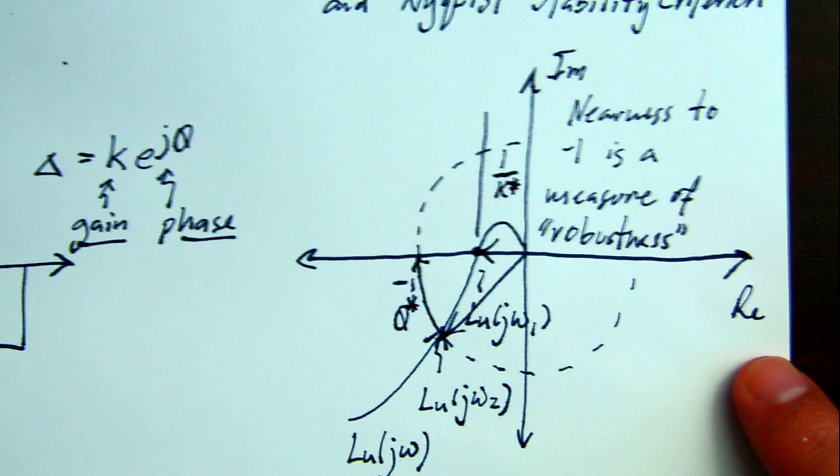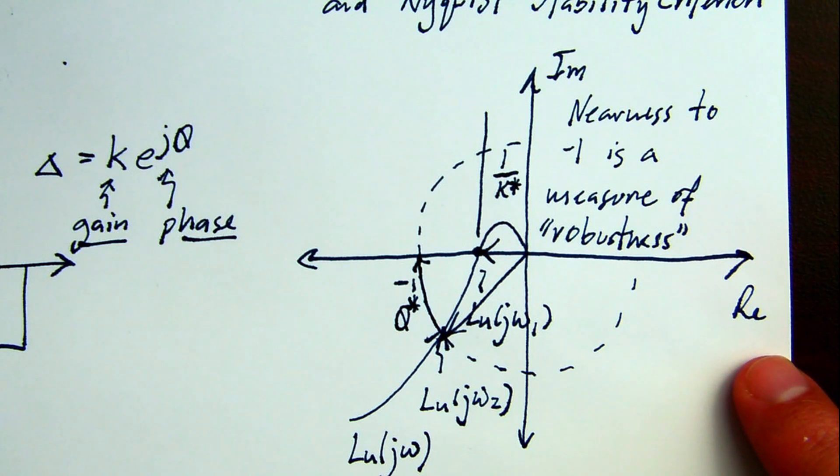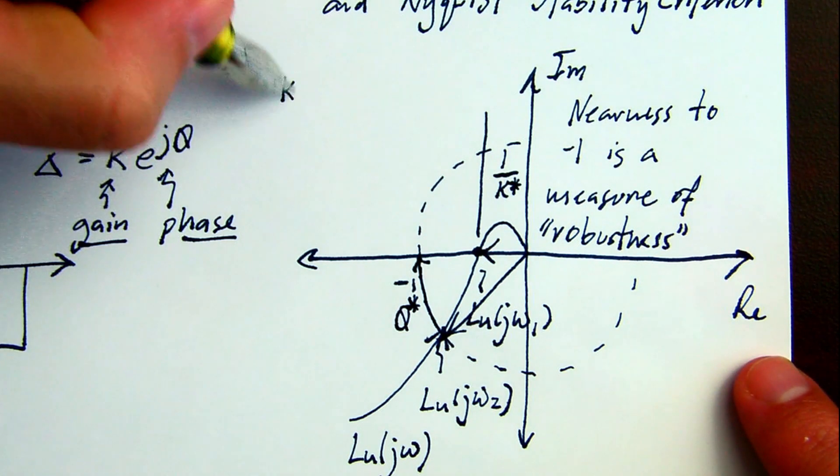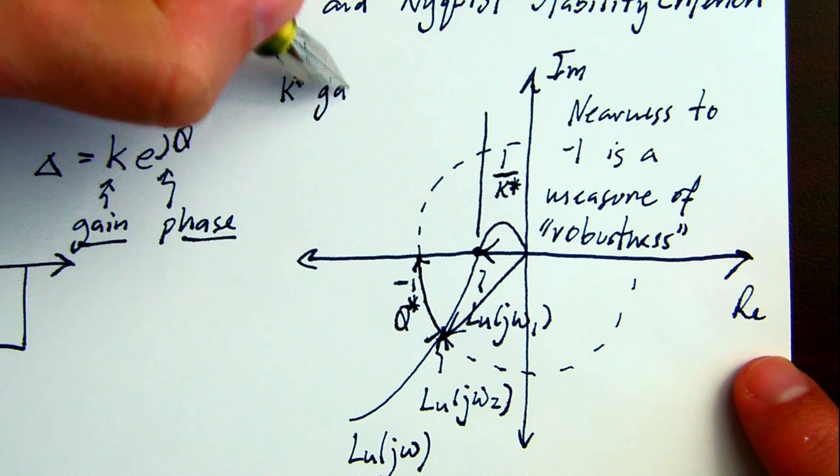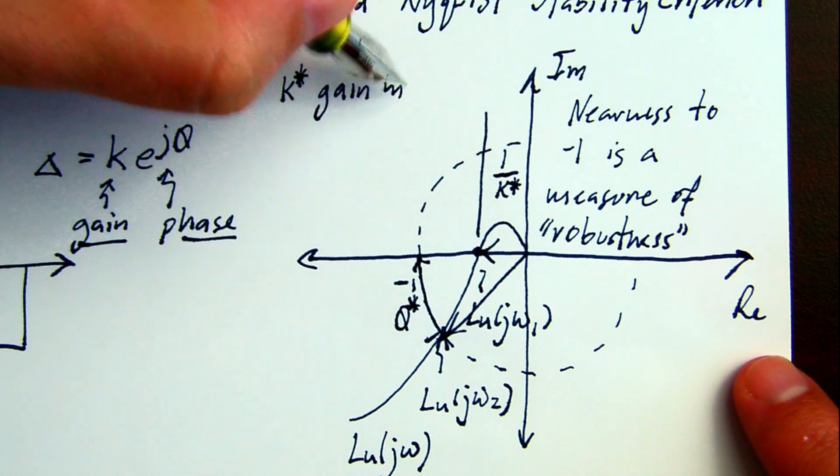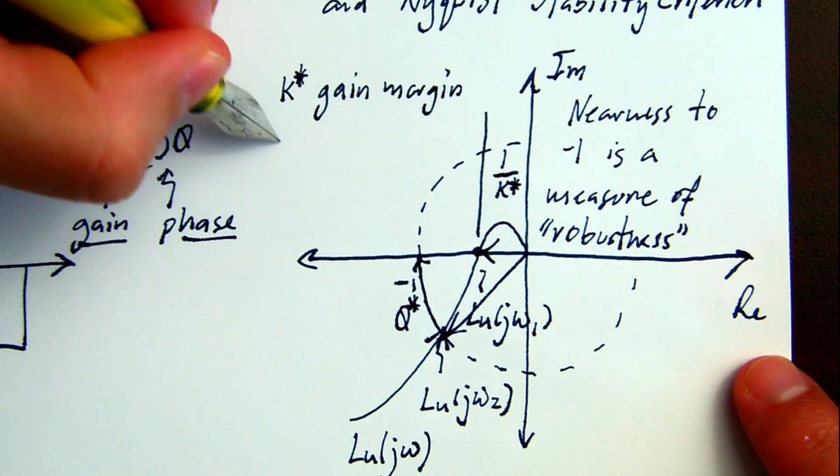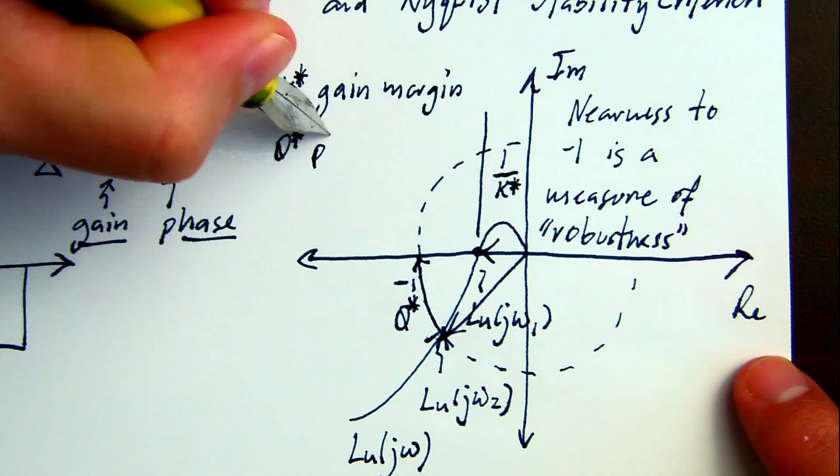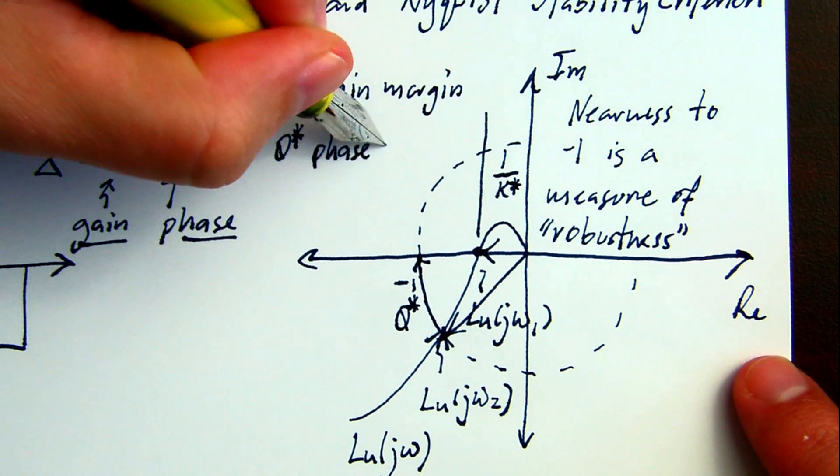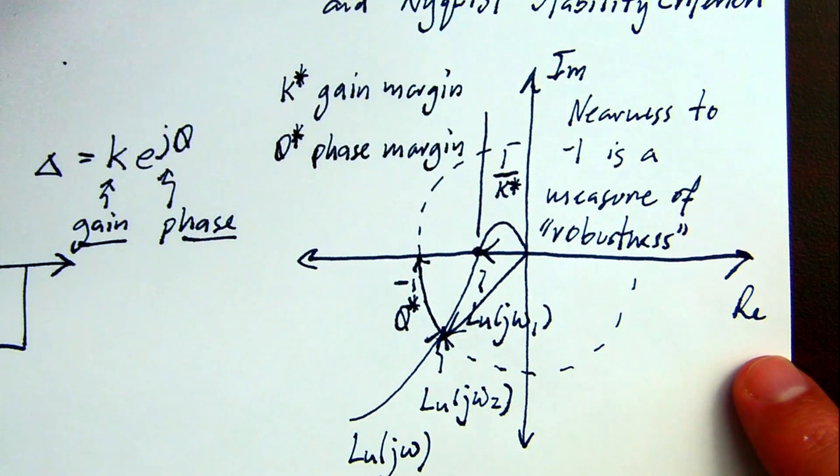In the follow-on to this video, we will derive formulas for K-star and theta-star, collectively referred to as the stability margins. For this, we'll use the delta uncertainty model. We'll also show how stability margins can be misleading. This will lead us to develop the return difference transfer function and the concept of vector margin. We'll also discuss cases of multiple margins and how to select the most conservative margins when there are more than one.